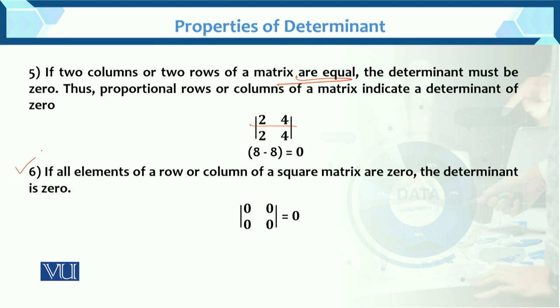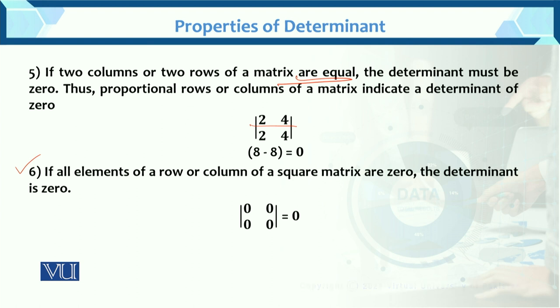Property number 6: if all elements of a row or column of a square matrix are zero, then its determinant is also zero. If all values in a row or column are zero, the determinant will be zero as well.